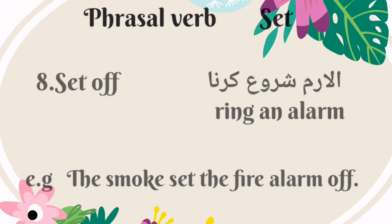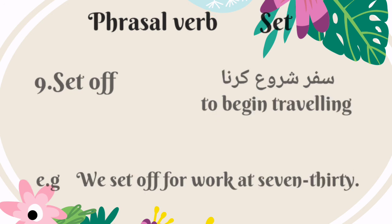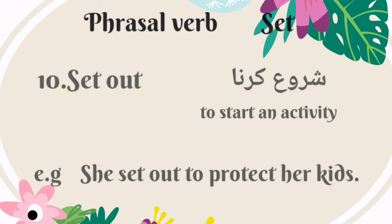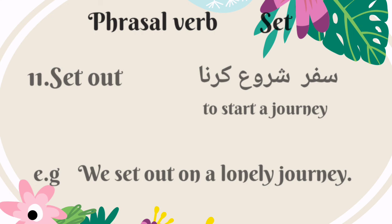The eighth phrasal verb is 'set off.' It means ring an alarm — Urdu mein is ka matlab hai alarm shuru karna. For example: the smoke set the fire alarm off. 'Set off' also means to begin traveling — Urdu mein is ka matlab hai safar shuru karna. For example: we set off for work at 7:30. The tenth phrasal verb is 'set out.' It means to start an activity — for example: she set out to protect her kids. 'Set out' also means to start a journey — for example: we set out on a lonely journey.